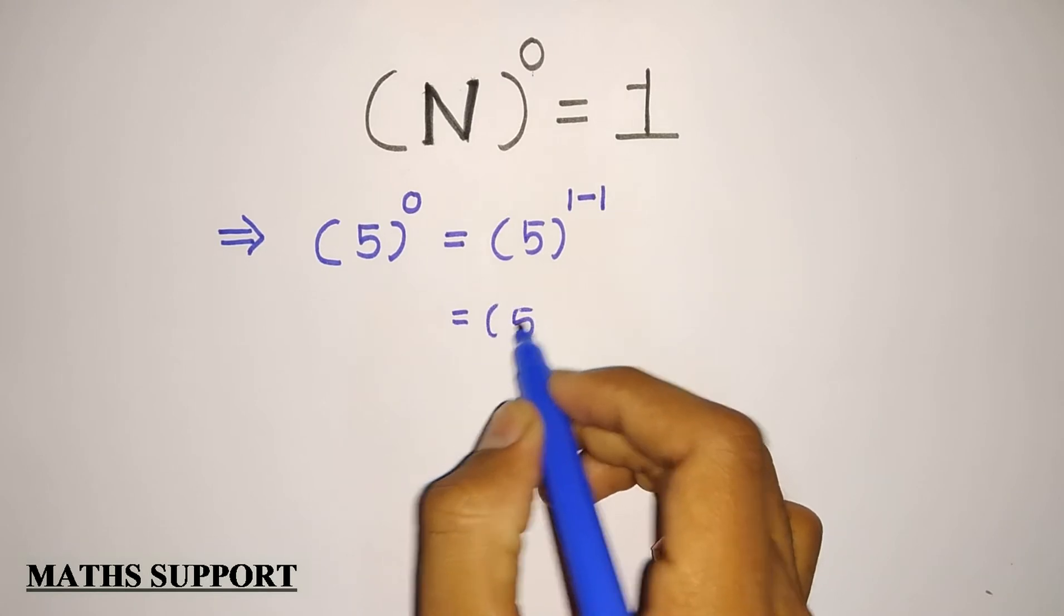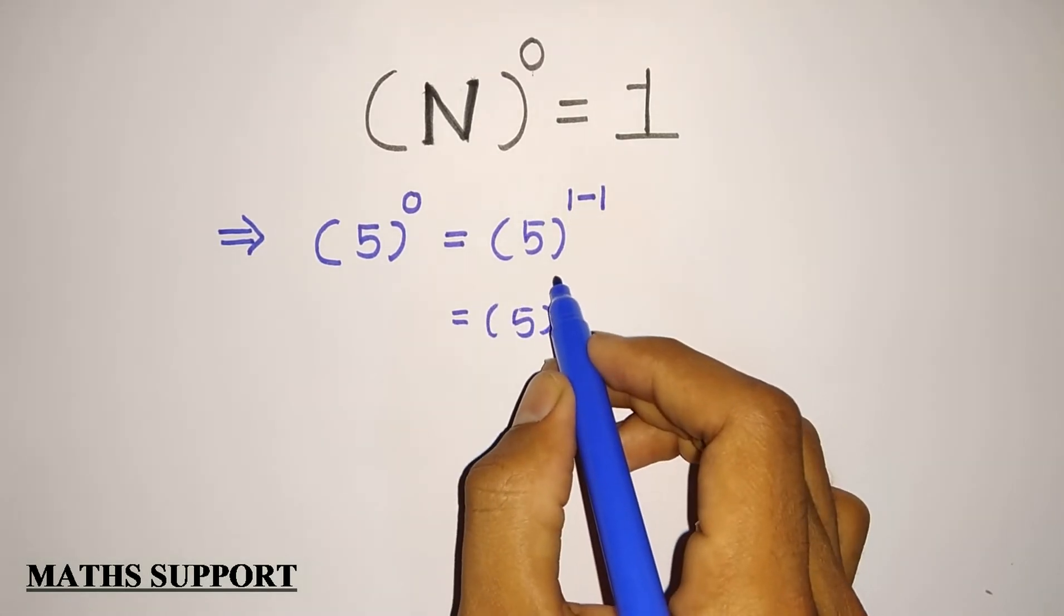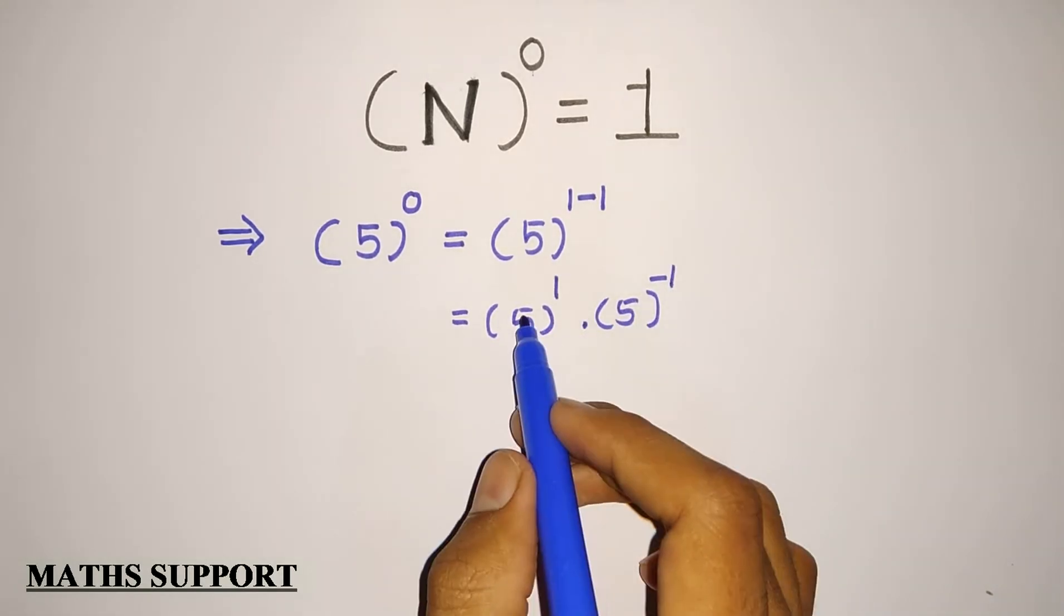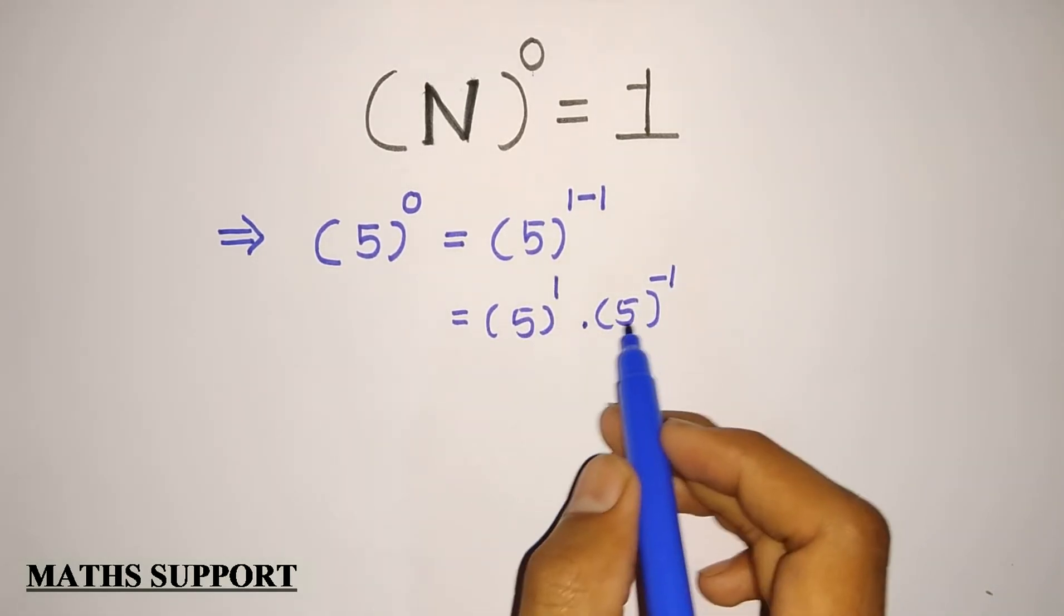What I can do for the power is 1 and minus 1. It is a multiplication of 2 base 5.